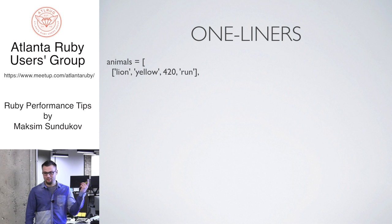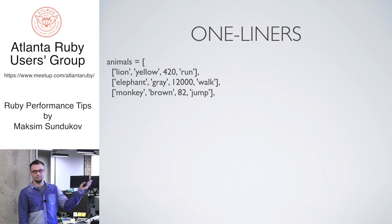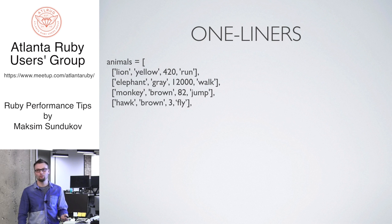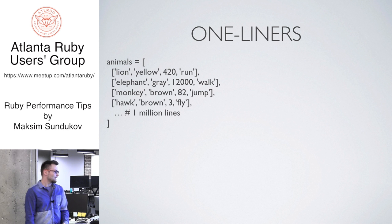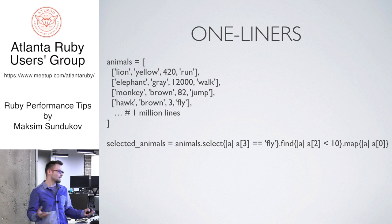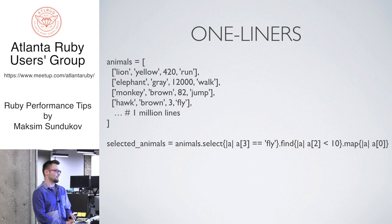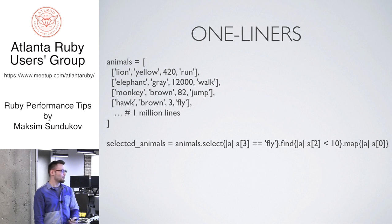Simple example: I'll get an array of animals — that's what I'm going to work with. It's a lion, it's yellow, it weighs about 420 pounds and runs. Basically all this array is: animal, what its color is, its weight, and what it usually does. Say you have a million lines like that, and you just want the ones that fly and are lightweight. You write a beautiful one-liner: it selects the ones that fly, it finds all that weigh less than 10 pounds, and you just get their name. So easy, so readable, it's pretty obvious what's going on.